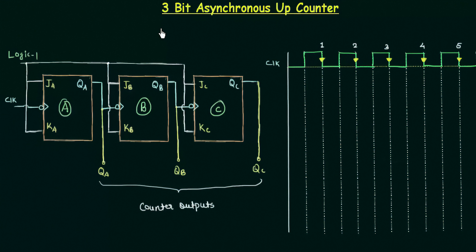Now this is the best time to study the three-bit asynchronous up counter. It is asynchronous and also an up counter. By asynchronous we mean the clock is not given simultaneously to all the flip-flops used; instead, the output of the first flip-flop acts as the clock for the next flip-flop. By up we mean it will start counting from a lower value, and every clock pulse it will count to a higher value.